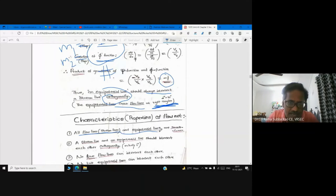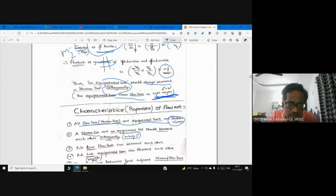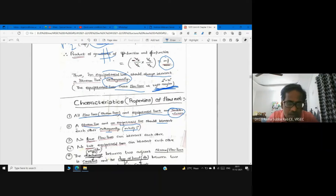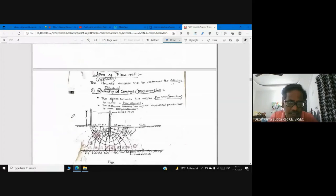Characteristics of flow nets: All flow lines and equipotential lines are smooth curves. Stream lines and equipotential lines should intersect orthogonally, mutually perpendicular. No two flow lines can intersect. Equipotential lines are parallel. They are not straight lines, they are smooth curves.